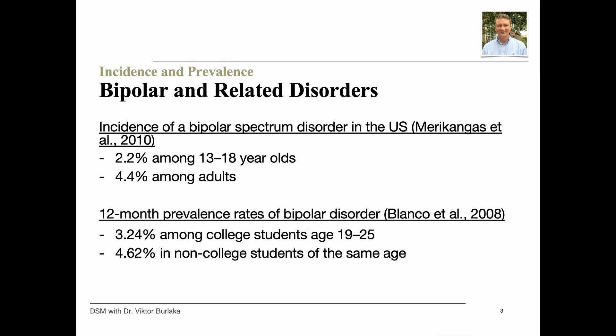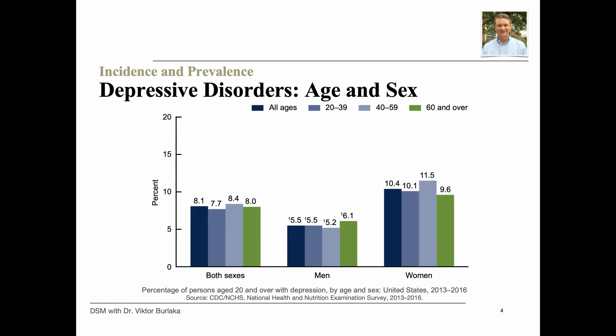Merikangas and colleagues reported in 2010 that the incidence of bipolar spectrum disorder in the U.S. was 2.2% among 13 to 18-year-olds and 4.4% among adults. Blanco and colleagues reported in 2008 that the 12-month prevalence rate of bipolar disorder is 3.24% among college students aged 19–25, and even higher at 4.62% among non-college students of the same age. Major depression is a common and treatable mental disorder characterized by changes in mood and cognitive and physical symptoms over a two-week period. During 2013–2016, 8.1% of American adults aged 20 and over had depression in a given two-week period.